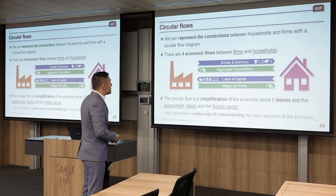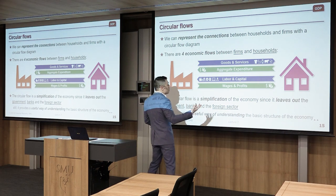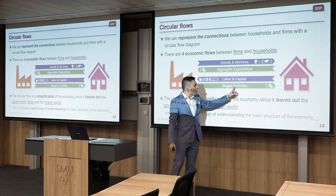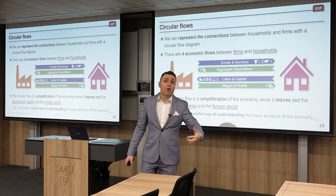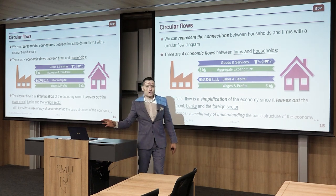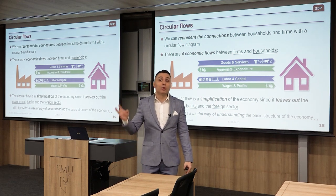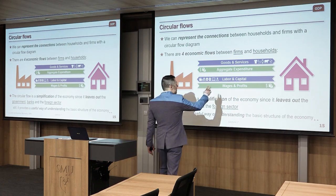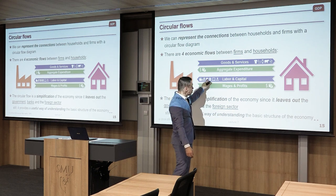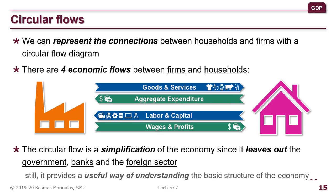In the circular flow, the goods and services flow represents GDP from the production side; the expenditure flow represents GDP from the spending side; and the wages and profits flow represents GDP from the income side. These are the three GDP measurement approaches. A fourth flow — labor and capital — could also estimate output, but it is extremely complicated accounting-wise and is almost never used.